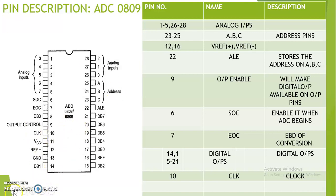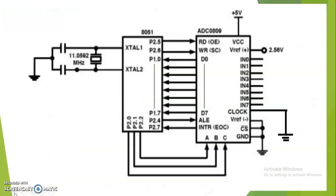Now we will see how to interface this ADC with 8051. As you can see in the diagram, this is the 8051 and this is the ADC 0809. ADC 0809 has 8 input channels. In order to select an input channel, it is essential to send a 3-bit address on ABC. Whatever you give on these input channels will be converted into a digital signal, and the 3-bit address on ABC selects which one of the 8 input pins is converted.